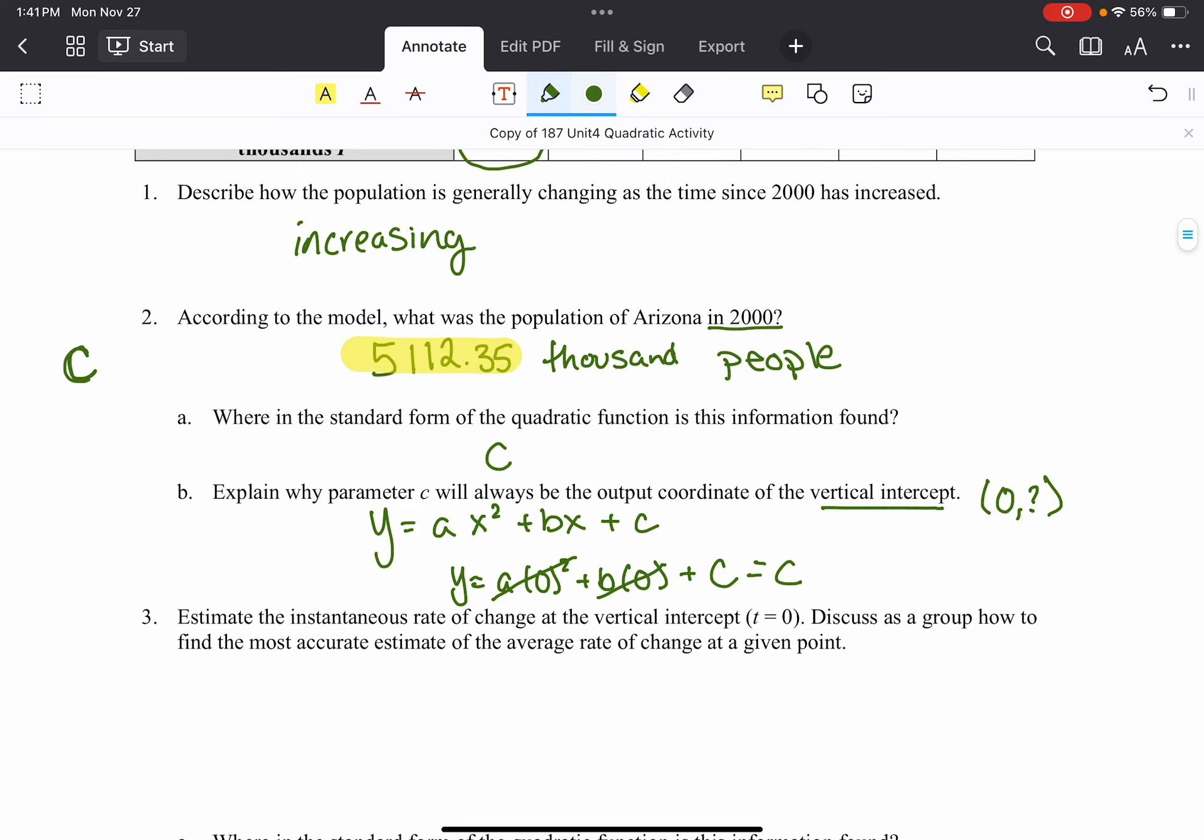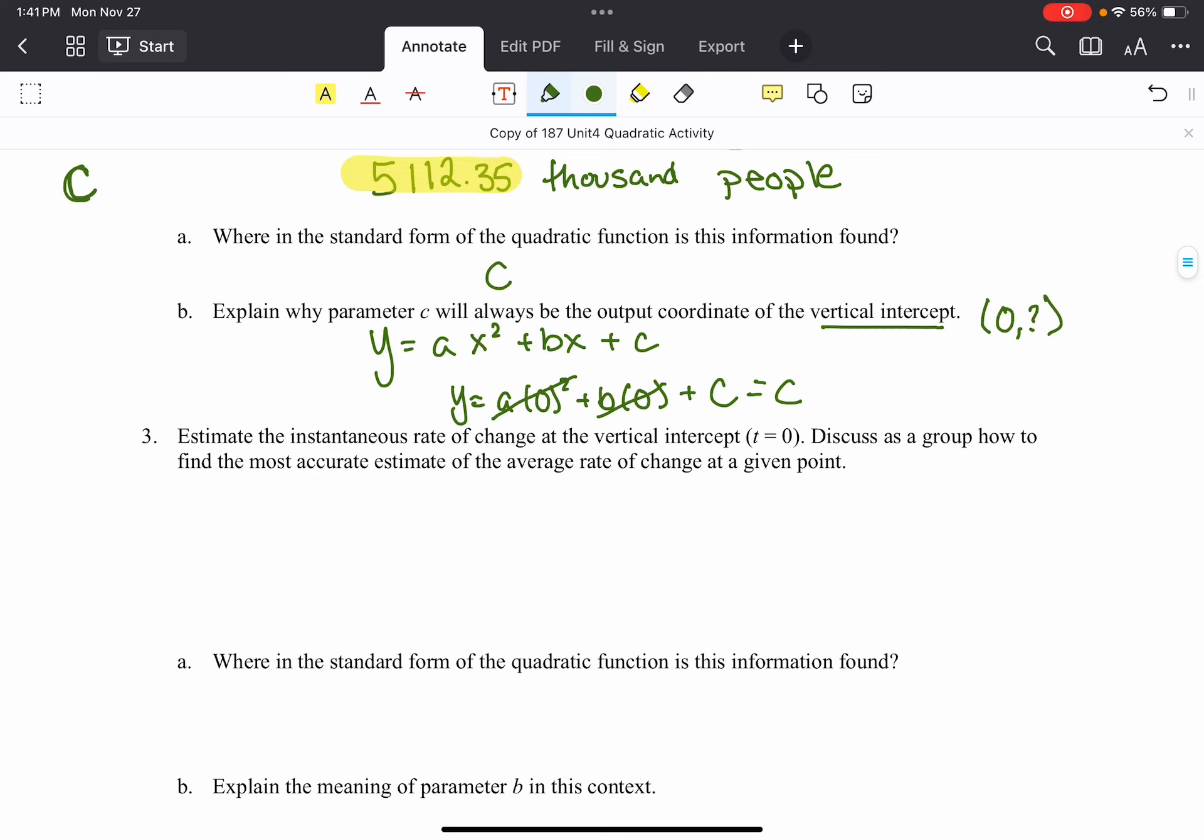All right, so let's turn our attention now to another parameter. So here we actually are going to want to estimate the instantaneous rate of change at the vertical intercept. So basically we want to figure out the slope at our initial point as close as we can get. Now normally a slope on a quadratic, the average rate of change would get us the slope between two points. But we want as close as we can to the slope at an individual point or what we'll call in calculus the slope of the tangent line.